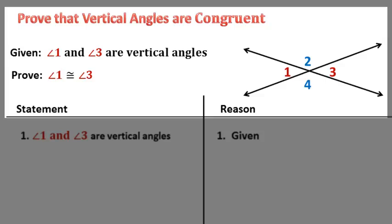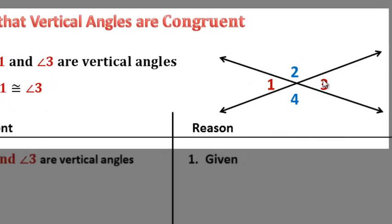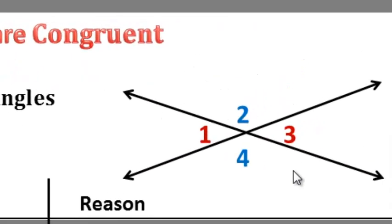The first thing we're going to look at is our given information. When you have something that you're given, go back to your diagram and look at it carefully so that you understand exactly what you're given. Here we have that angle one and angle three are vertical angles. Let's look at our diagram — here are one and three. Remember, we've already been using that vertical angles are congruent, but we're taking that step back to prove how we establish that.